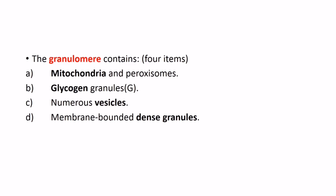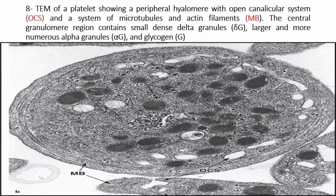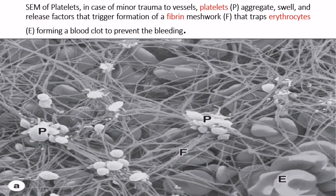Here is a transmission electron microscope image of a platelet showing the peripheral hyalomere with an open canalicular system and a system of microtubules and actin filaments. The central granulomere region contains small dense delta granules, larger and more numerous alpha granules, and glycogen.